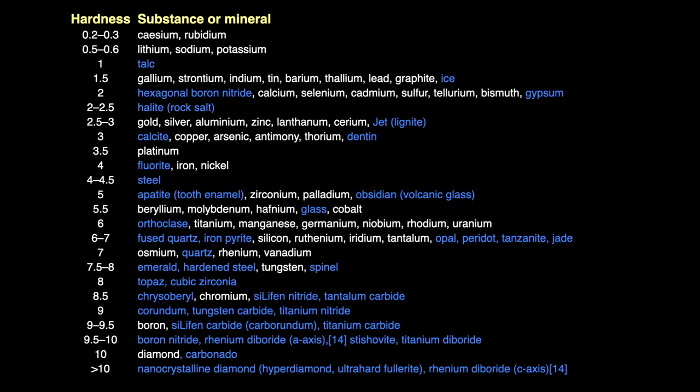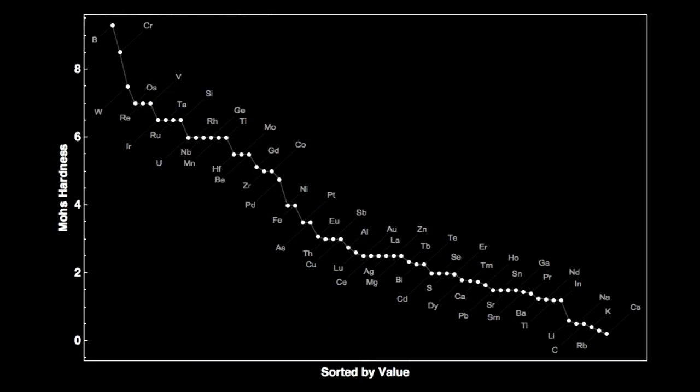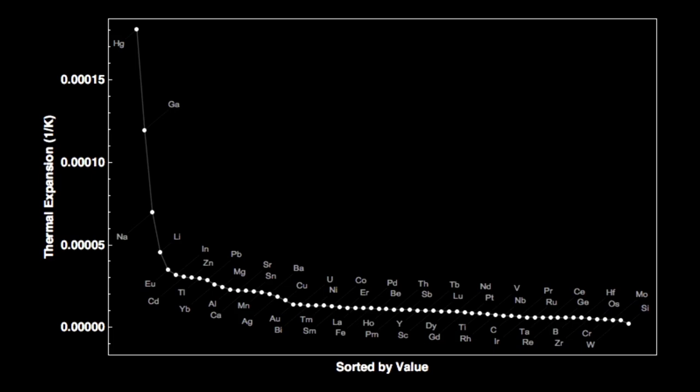Barium is a soft element, coming in at only 1.25 on Mohs' scale of hardness — you could easily scratch barium with your fingernail. Here's a chart of element hardness from hardest (boron on the left) to softest (cesium on the right). Barium is the tenth softest element, not much harder than cesium.